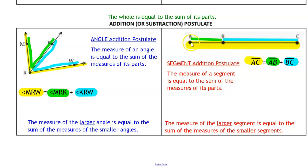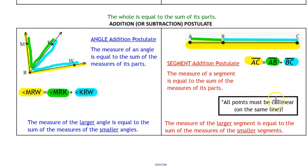There is one caveat: in order for this to work, A, B, and C — all three points considered — have to be collinear. As long as the points are collinear, we're able to use the segment addition postulate very easily.